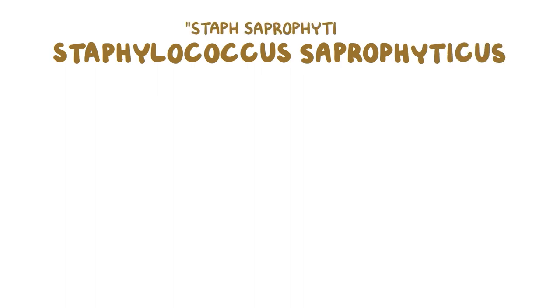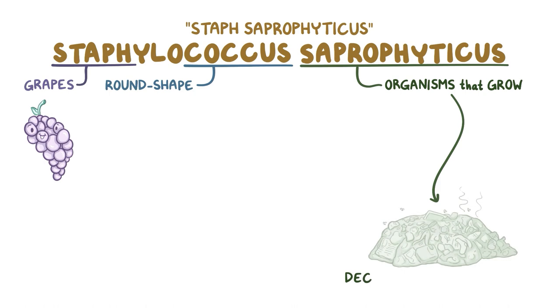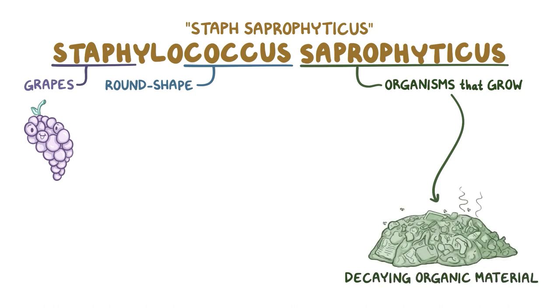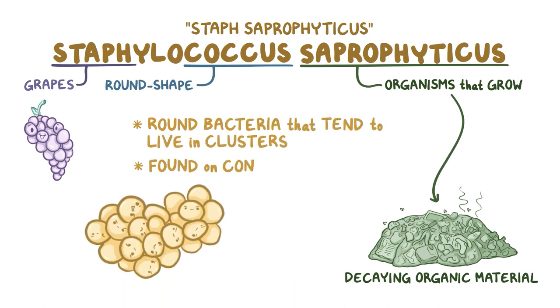With Staphylococcus saprophyticus, sometimes called Staph saprophyticus, staph means grapes, coccus means round shape, while saprophyticus refers to organisms that grow on decaying organic material. So Staphylococcus saprophyticus are round bacteria that tend to live in grape-like clusters, and are commonly found on contaminated meat products.